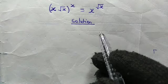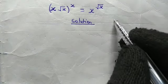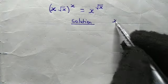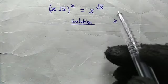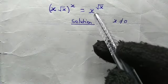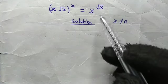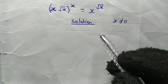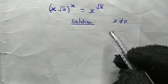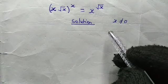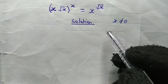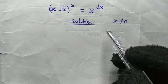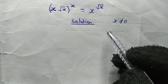Before we proceed, we need to take note that x cannot be equal to 0, because 0 to the power of 0 is undefined. So x is not going to be equal to 0. But there are other two solutions left — let's find them.